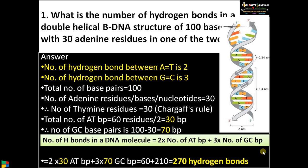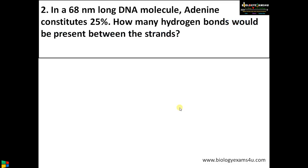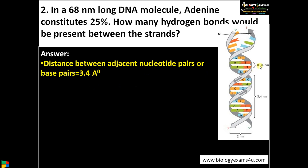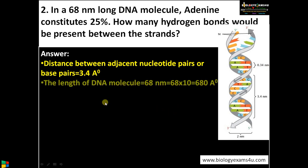Now moving to the second question. In a 68 nanometer long DNA molecule, adenine constitutes 25% — how many hydrogen bonds would be present between the strands? Here the length of the DNA molecule is given. The distance between adjacent base pairs is 0.34 nanometer or 3.4 angstroms. The length is 68 nanometers, converted to angstroms that is 680 angstroms. Both units used must be consistent.